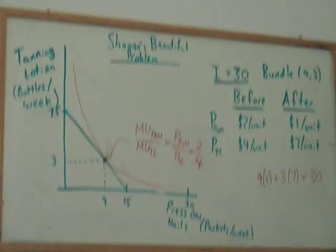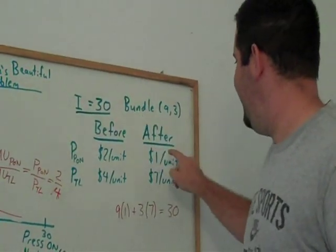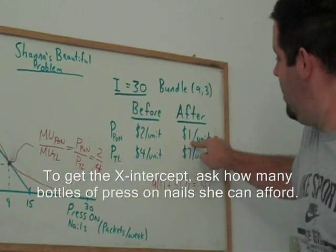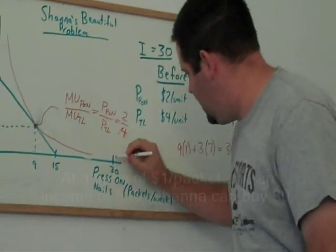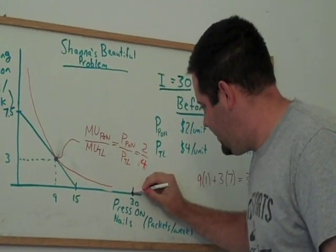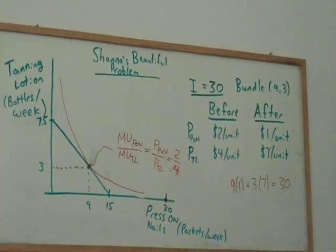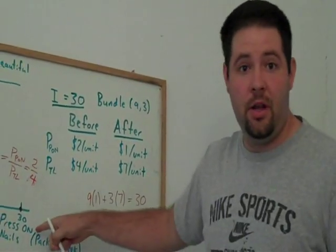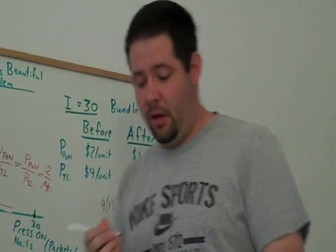What's another point on the budget constraint? Well, notice it's pretty easy to figure out where the x-axis is here. And so let's go ahead and I already have it labeled here. We can say if Shannon spent all of her money on press-on nails, she would buy 30 units of that good.